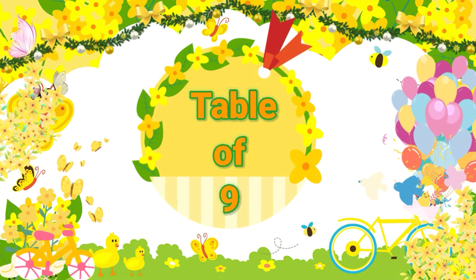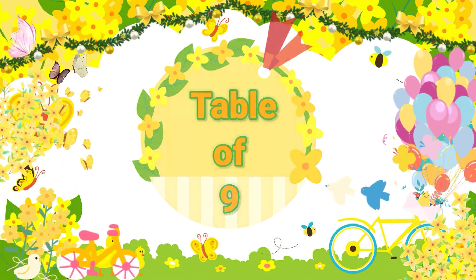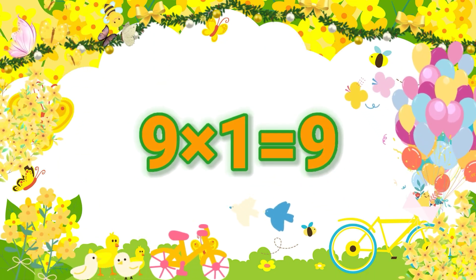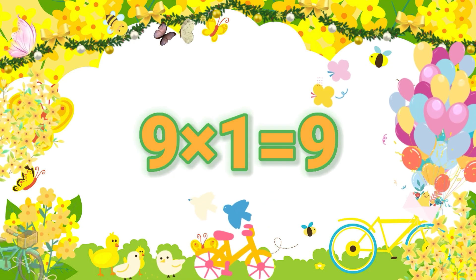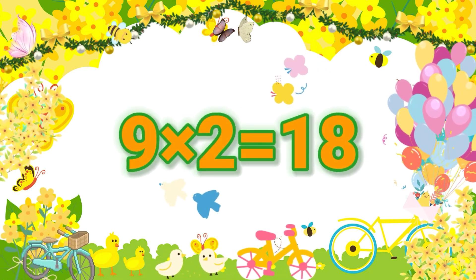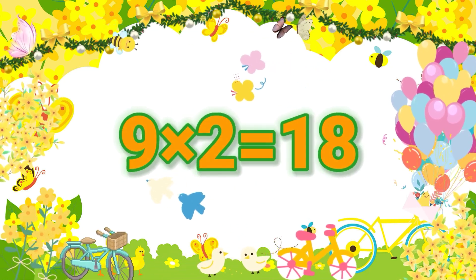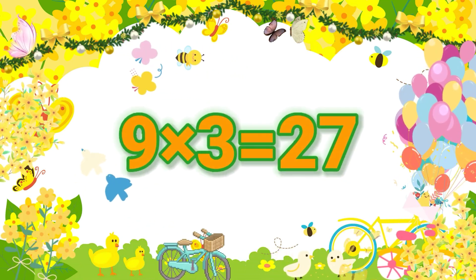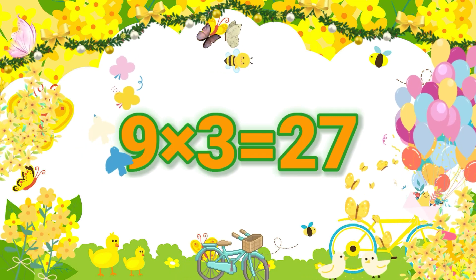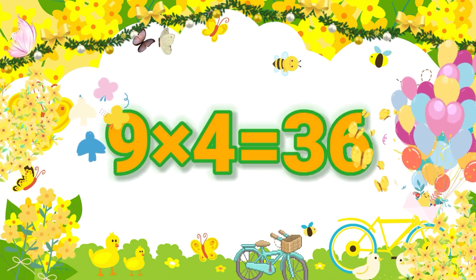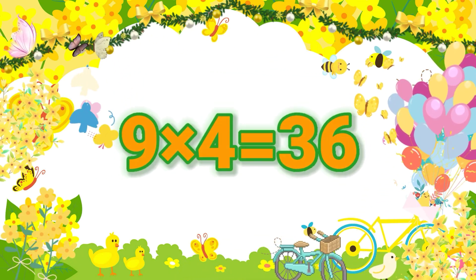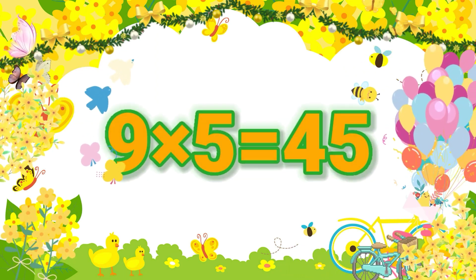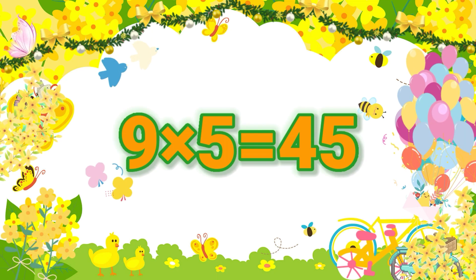Table of nine. Nine ones are nine. Nine twos are eighteen. Nine threes are twenty-seven. Nine fours are thirty-six. Nine fives are forty-five.